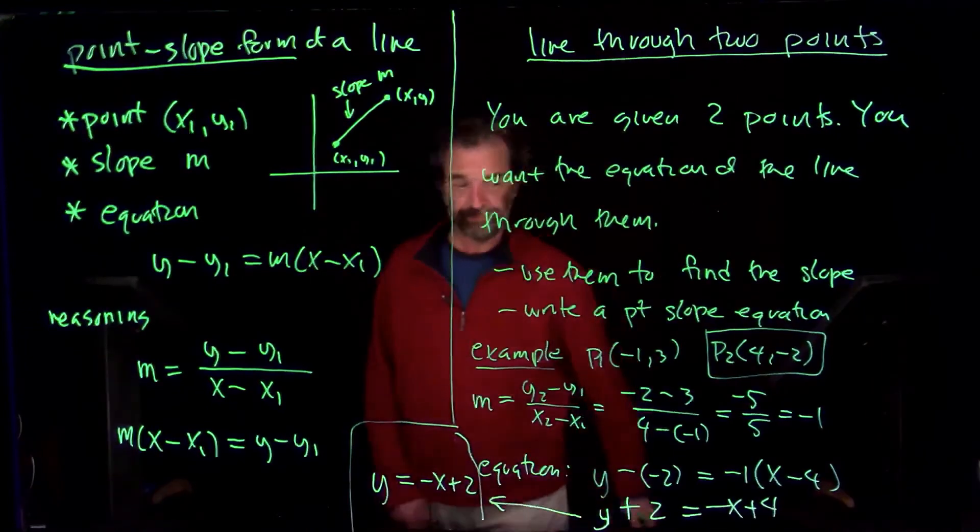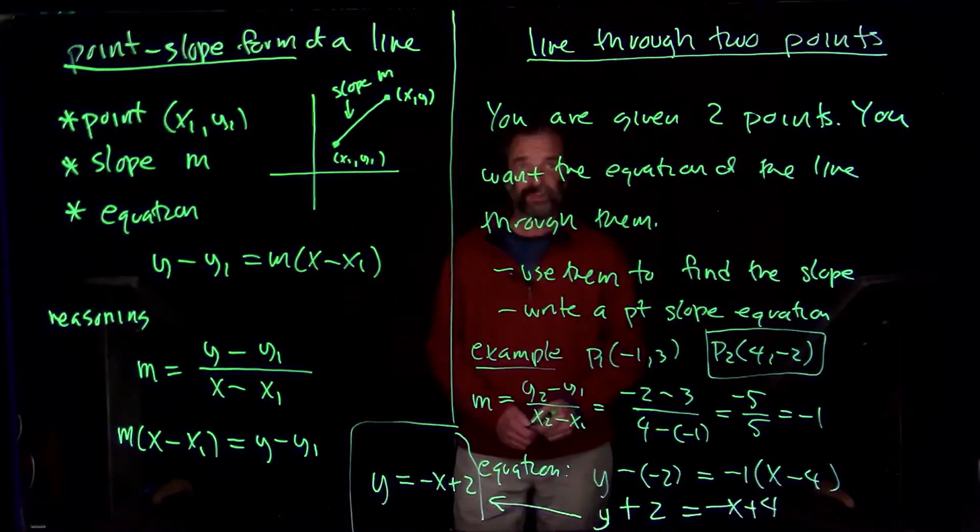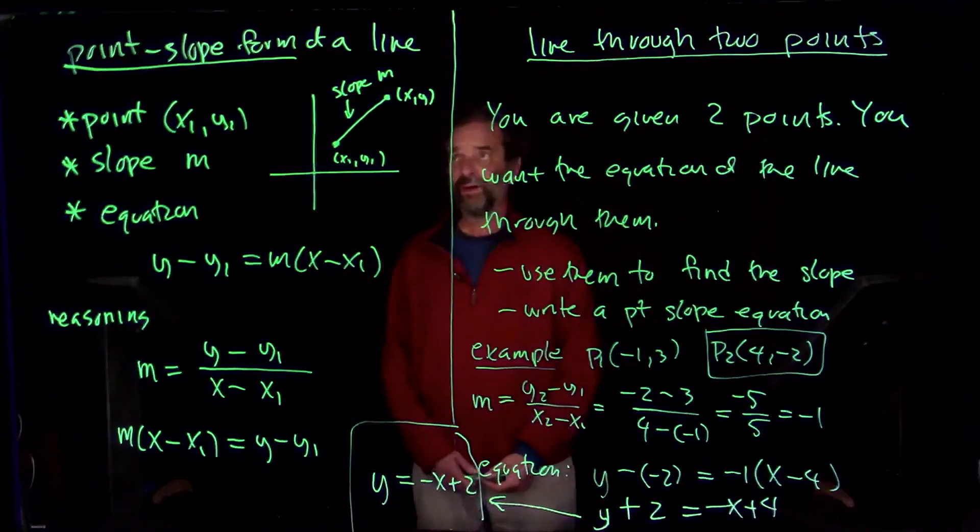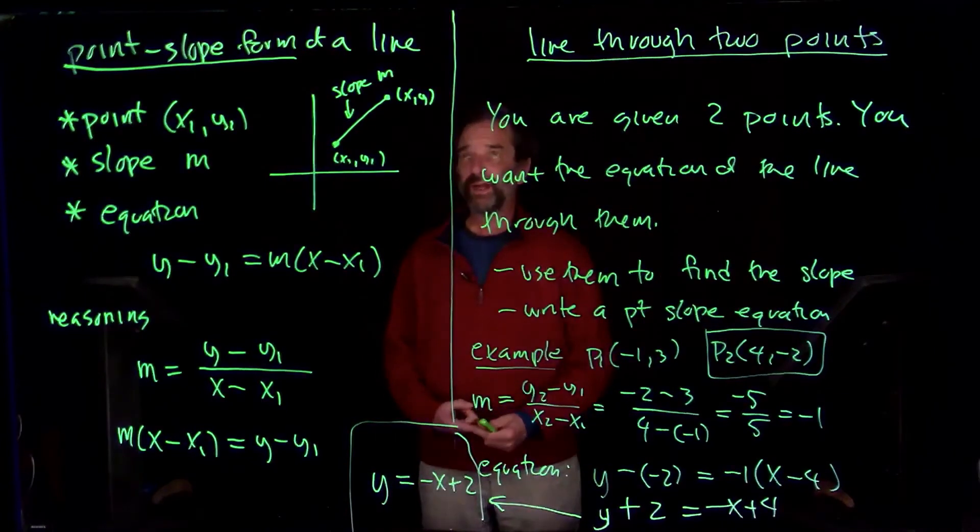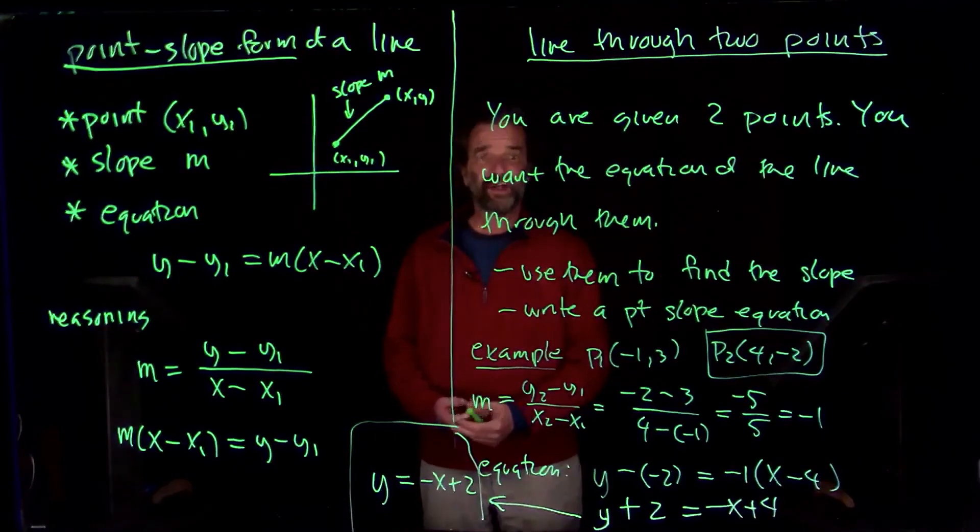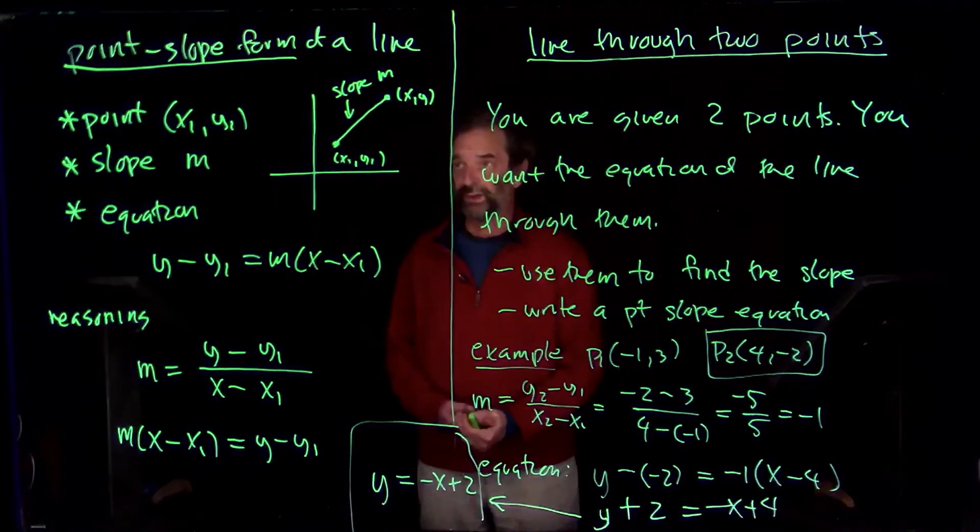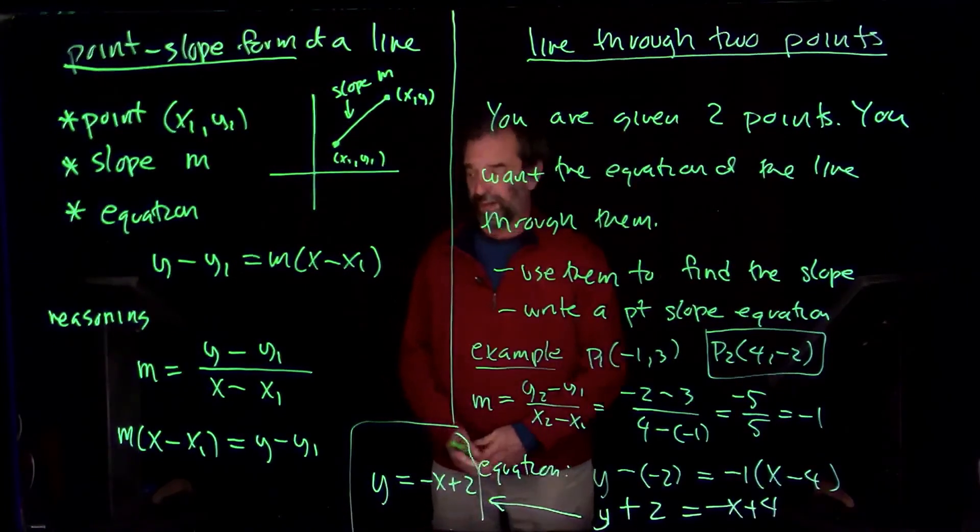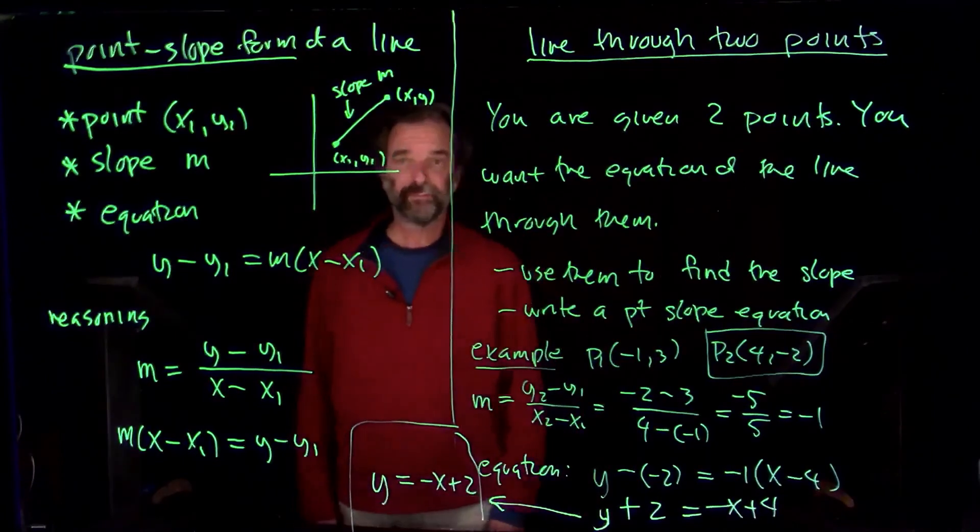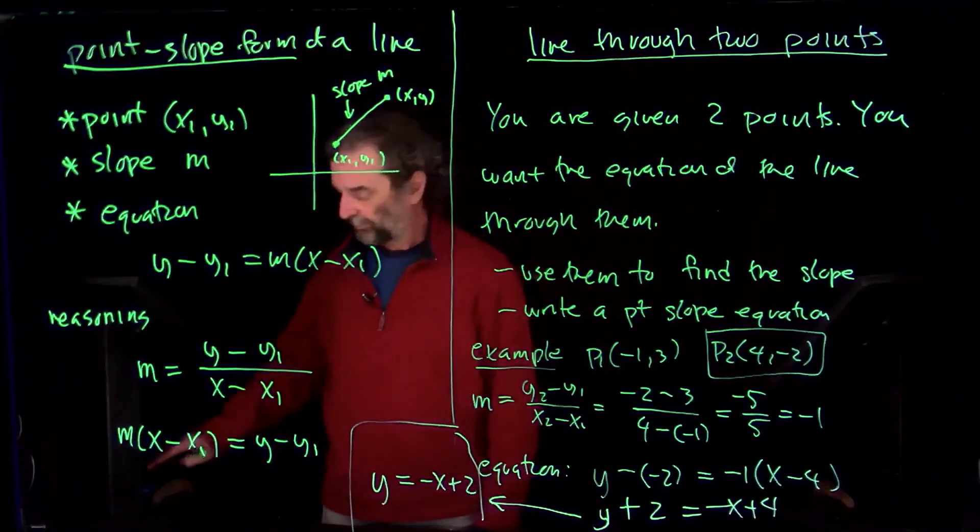Y equals -x plus 2 as a final answer. Put this over here like that. All right. So we've got slope-intercept, point-slope, and line-through-two points. Let's look at some more examples. Here they come.